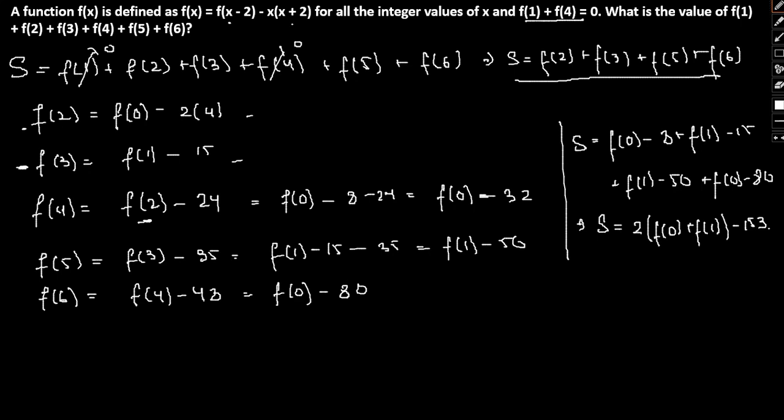Now we already know that f(1) + f(4) is equal to 0. So therefore if we substitute the value of f(4), we have f(1) + f(0) - 32 = 0. So we know f(1) + f(0) = 32. So I am going to substitute this value here again. So therefore S = 2 into 32 - 153. So therefore the sum is S = -89, which is our answer.